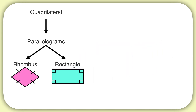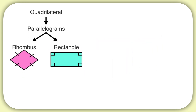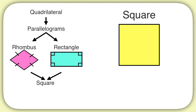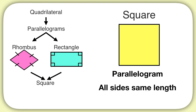But believe it or not, there's actually one more type of parallelogram. If you combine both a rhombus and a rectangle, you end up with a square. A square looks like this. It's a parallelogram — it has all sides being the same length, shown with those dashes, and it has four right angles, shown with those square angle signs.